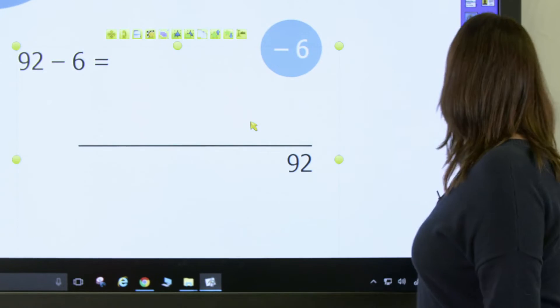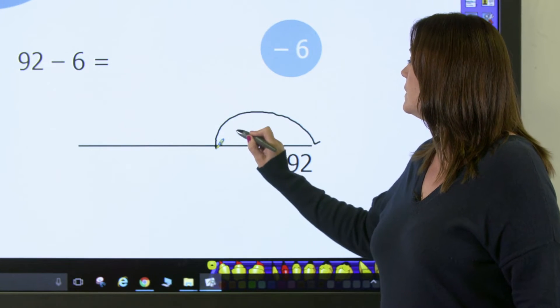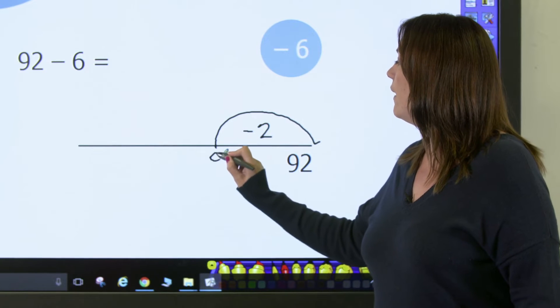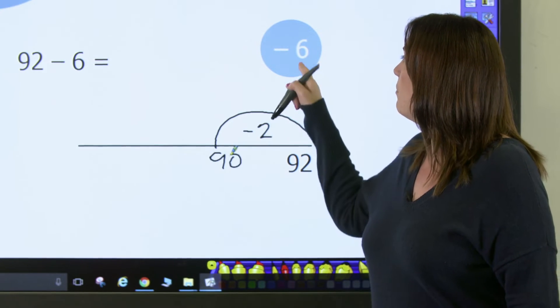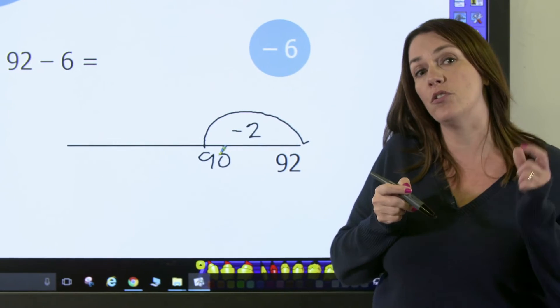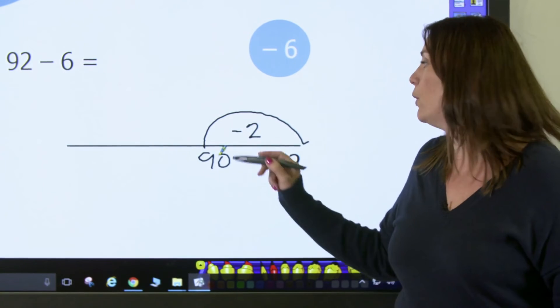So I'm going to take a jump back, take away 2. That will take me to 90. And my number bonds to 6—I know that 2 and 4 are 6—so now I need to take away 4.